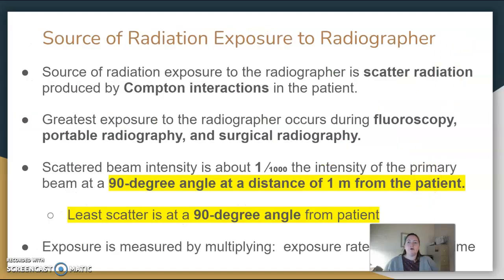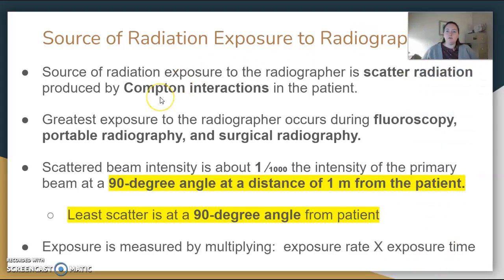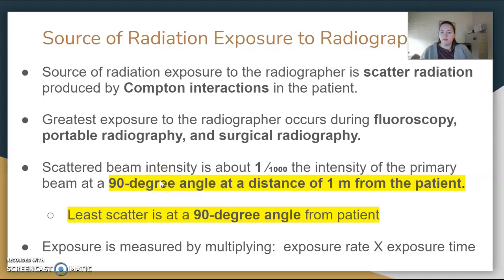Our main dose comes from Compton interactions with the patient. The areas where you'll get your greatest exposure are fluoroscopy, portables, and the OR during surgical rotations — that is when we are closest to not only the patient but the x-ray source. The scattered beam intensity reduces to about 1/1,000th of the intensity when it's at a 90-degree angle and 1 meter away from the patient. So if you're ever asked the area of least scatter, it's at a 90-degree angle from the patient.